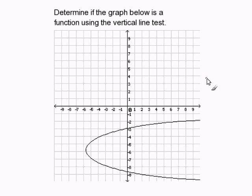And in order to test that, all we need to do is draw a vertical line onto our graph. In this case, I draw a vertical line down here, and we notice that our line intersects our graph at two points.